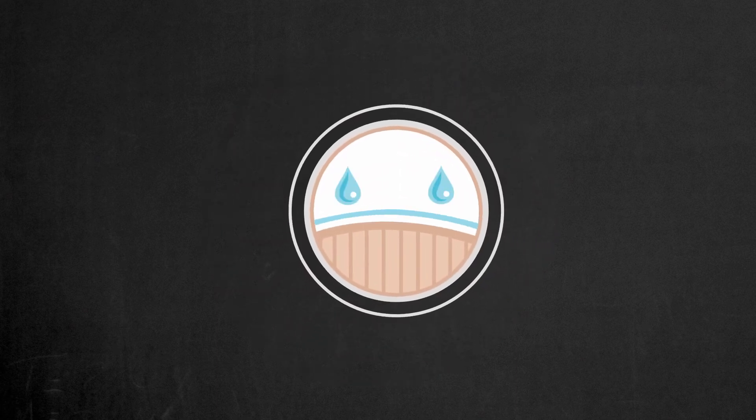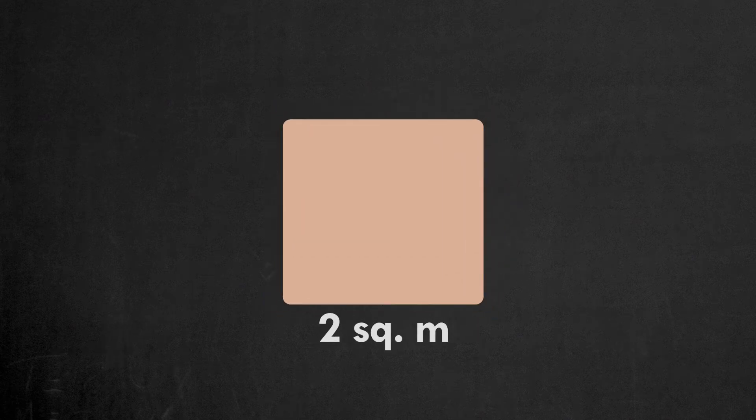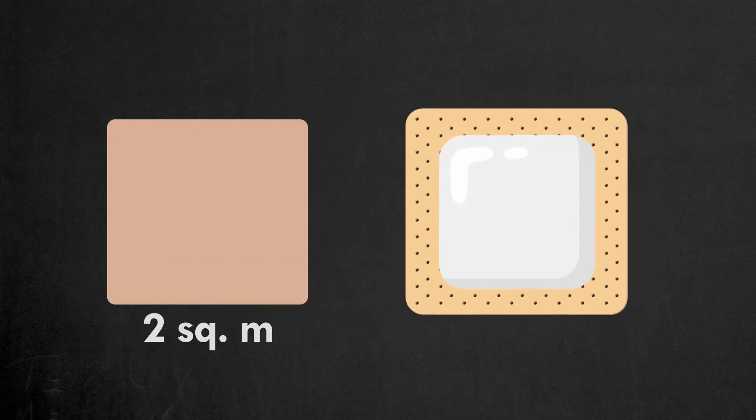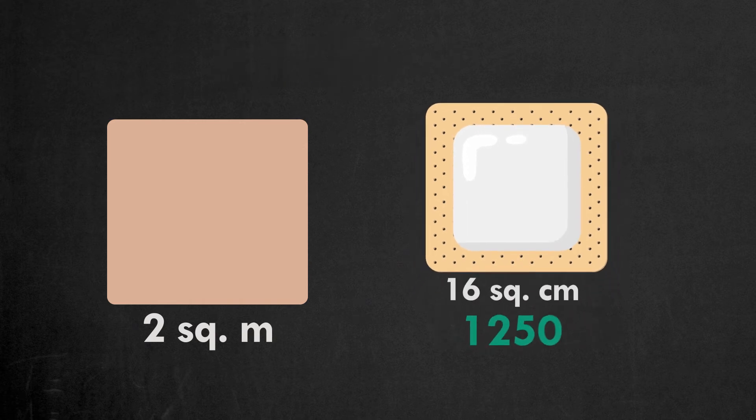Let's estimate how much THC will be sweated by the whole body. We'll assume that each square inch of our skin excretes sweat for our calculations. The area of the skin surface of an average man is 2 square meters. The area of a single sweat patch is 16 square centimeters. We need about 1,250 patches to cover the whole body.